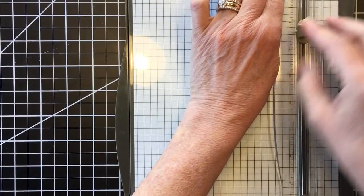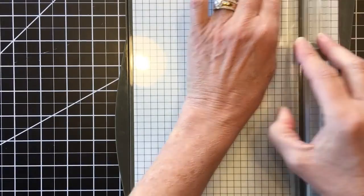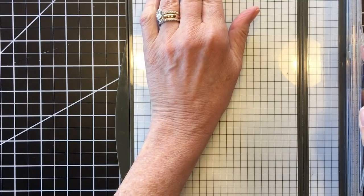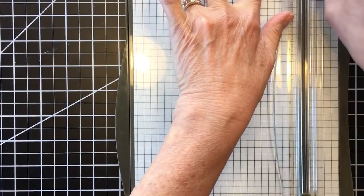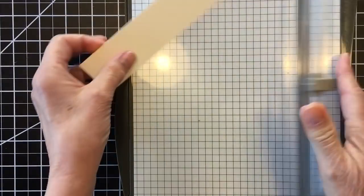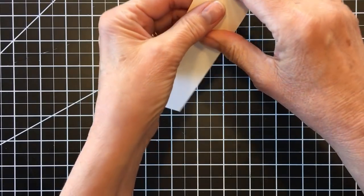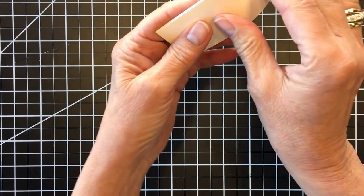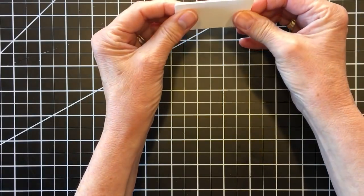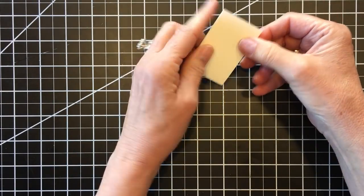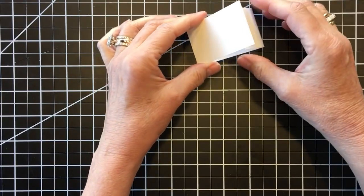We're going to score because this both cuts and scores. This is our Stampin' Trimmer. I'm going to score at 2 and 1/2 and 5. We also have a scoring tool but I just love how this is all in one. Then I'm going to bend these in. You don't need to add the Ghirardelli square in advance. I just put them in at the end so I wasn't messing with the bulk of them.